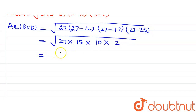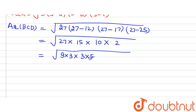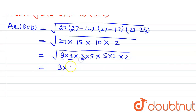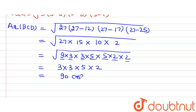Simplifying under the root: 27 = 9 × 3, 15 = 3 × 5, 10 = 5 × 2, and the remaining factor is 2. Pairs of 3, 5, and 2 each come out of the square root, giving 3 × 5 × 2 = 30... on solving, the area of triangle BCD = 90 cm².